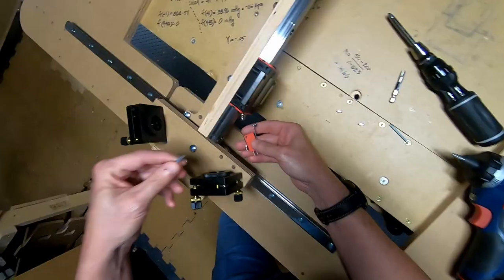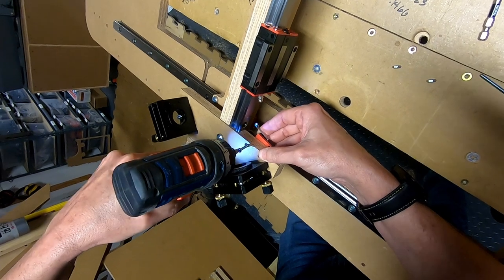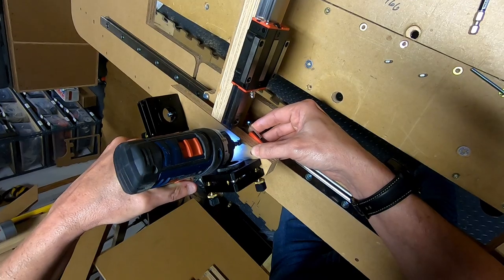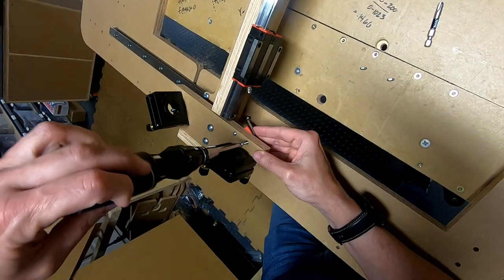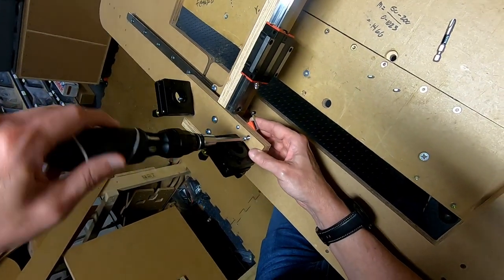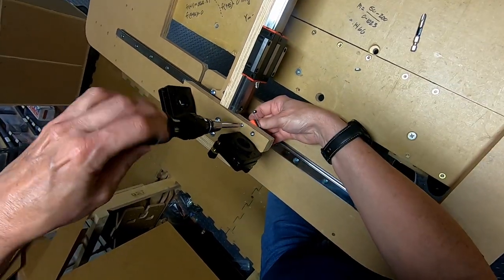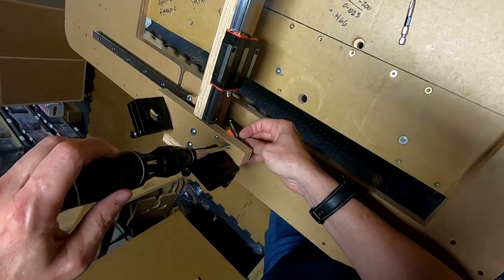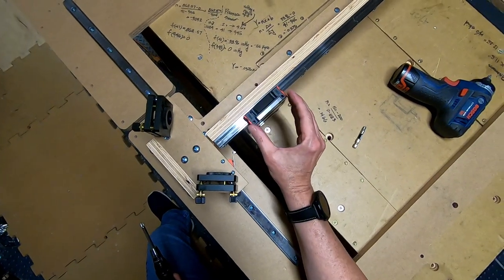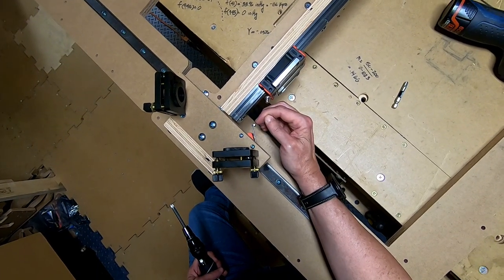To fasten the limit switch, you're going to use the two number six screws, and just drive the screw through the mounting hole of the limit switch. Once the Plexi piece has been mounted to this bearing block, it'll hit the roller on the lever here.